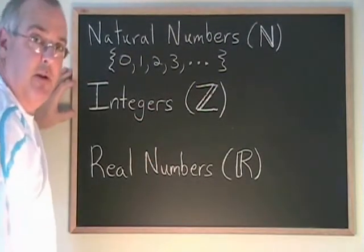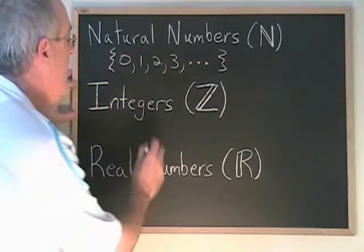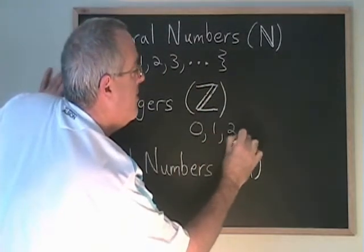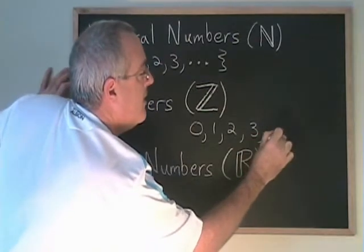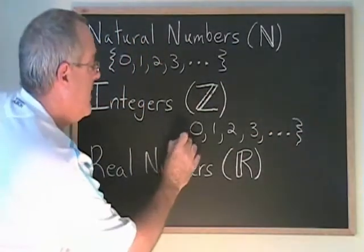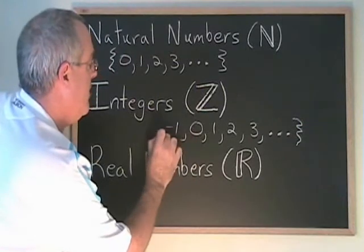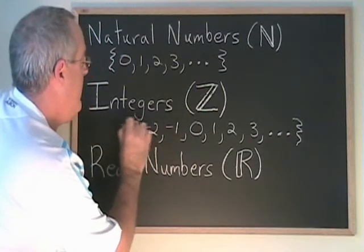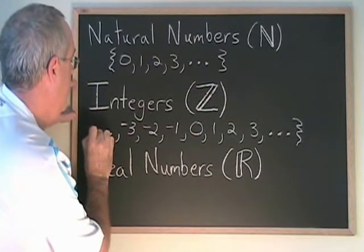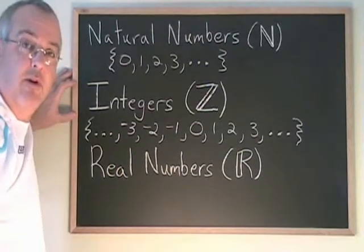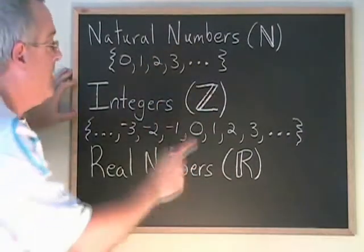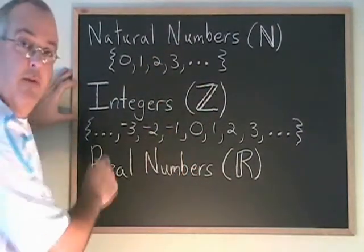Integers is very similar. You have the number 0, you have 1, 2, 3 going on and on in the positive direction, but you also have negative 1, negative 2, negative 3 going on and on in the negative direction. Integers includes the natural numbers and the negative whole numbers too.